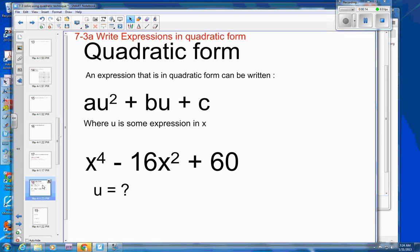So first, what does it mean by quadratic form? Quadratic form means the first term is squared, the second term is to the first power, and there is no exponent on the third term.